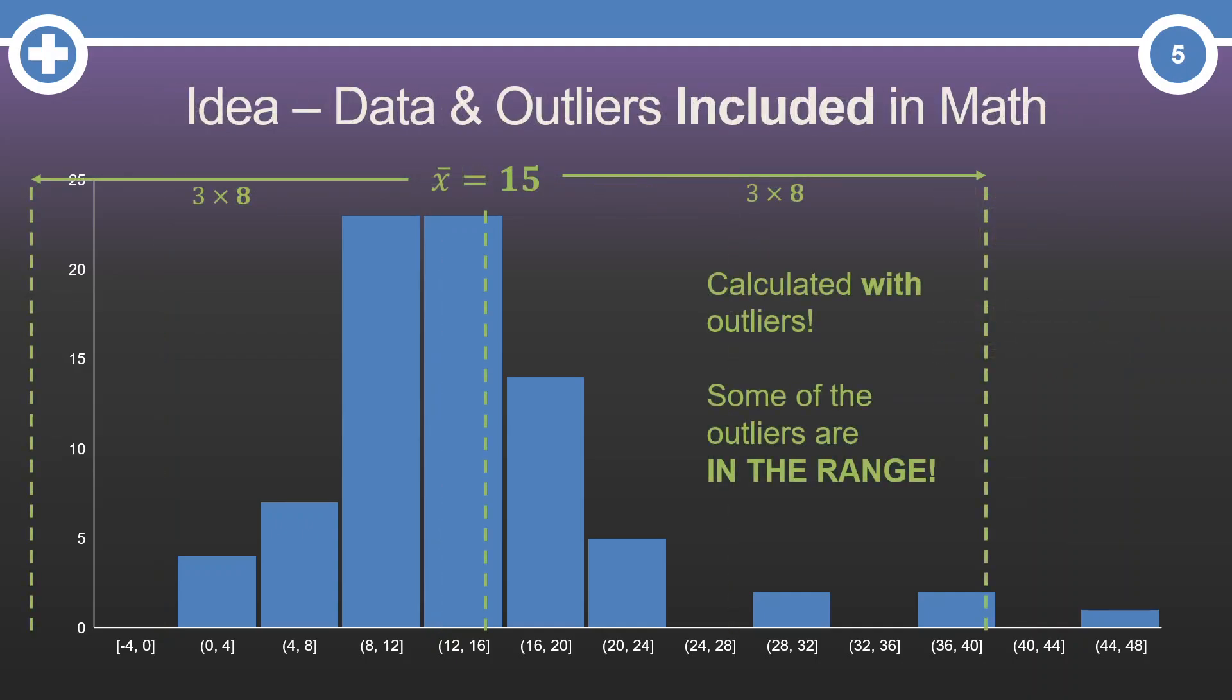Once we add those points into the calculations, things change. The average is now 15 instead of 13. And the standard deviation is now 8 instead of 5. This moves our range and makes it wider. Now our range actually covers 3 of the 5 anomalies. So we would only think 2 things look weird here. This is a problem.